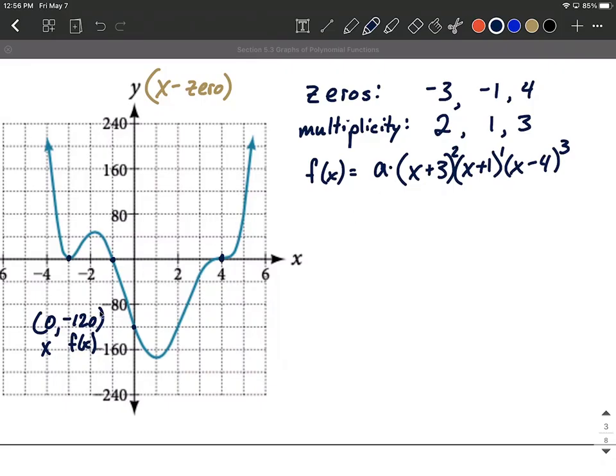So let's plug in that ordered pair, the y-intercept that I picked out. So zero for our x's, negative 120 is going to go on the left hand side for f of x. So negative 120 equals a times (0 + 3)^2 times (0 + 1)^1 times (0 - 4)^3.